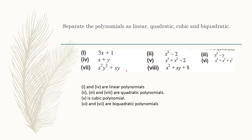Last question of exercise 5.1. Separate the polynomials as linear, quadratic, cubic and biquadratic. Here, we have 8 different expressions. In these expressions, 1 and 4 are linear polynomials because they have their degree 1. Their variable have the degree 1.